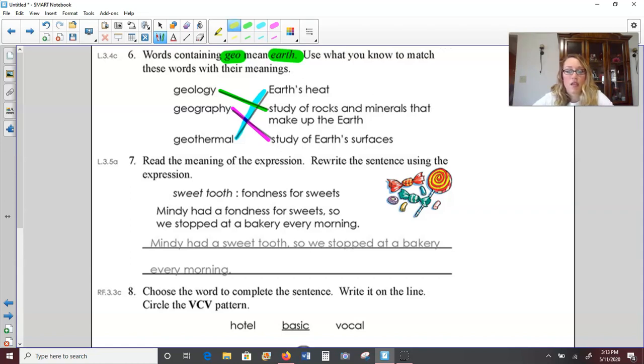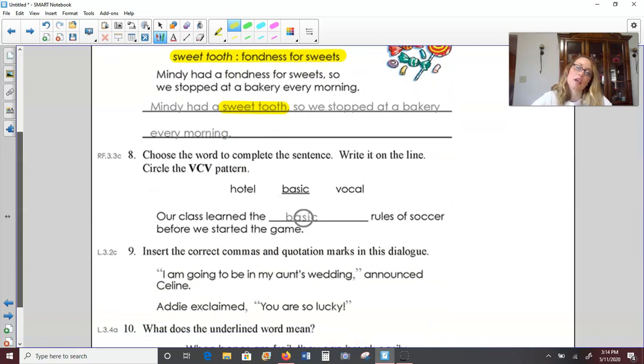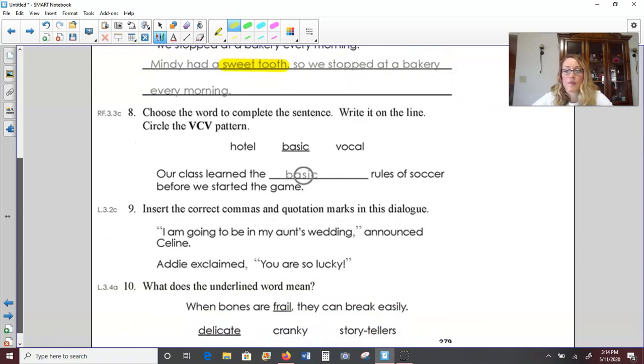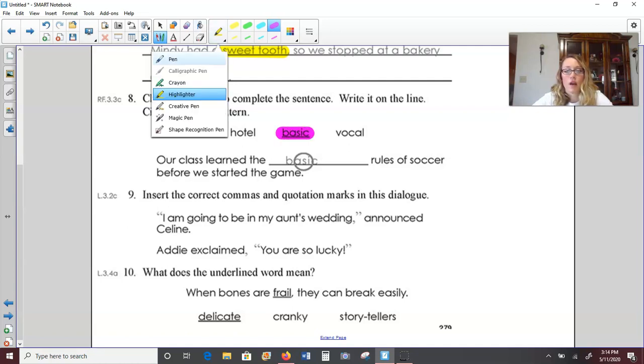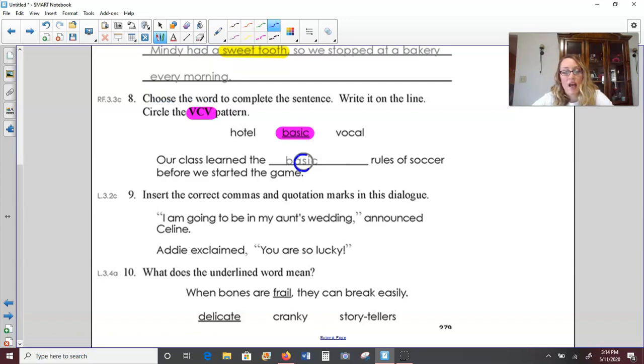Geography is the study of the earth's surface. We studied this when we were talking about land forms like volcanoes, plains and valleys, mountains. And then geothermal. Thermal has to do with heat. So geothermal is earth's heat. Next up, number seven. Read the meaning of the expression. Sweet tooth means you have a fondness for sweets. So instead of saying Mindy had a fondness for sweets, we could say Mindy had a sweet tooth, so we stopped at the bakery every morning. Number eight, choose the word to complete the sentence and circle the vowel consonant vowel pattern. Our class learned the basic rules of soccer before we started the game. The ASI would be the vowel consonant vowel in that word.